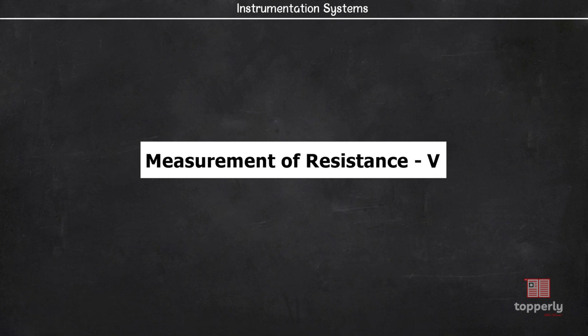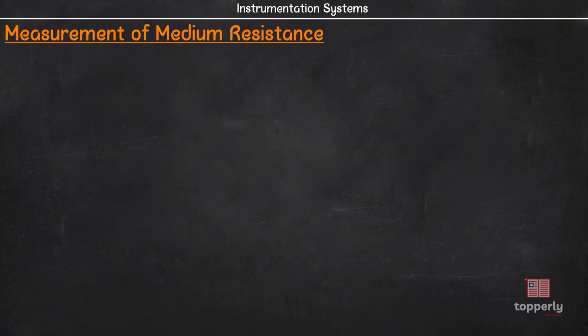Hey everyone, welcome back to Instrumentation Lectures. For the past few videos, we were discussing measurement of resistances and so far we have covered the methods of low resistance measurement. From this lecture onwards, we will study about measurement of medium resistances. We have already learned that medium resistances are those resistances whose resistance value lies between 1 Ohm and 0.1 Mega Ohm.